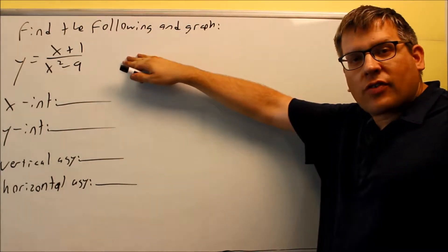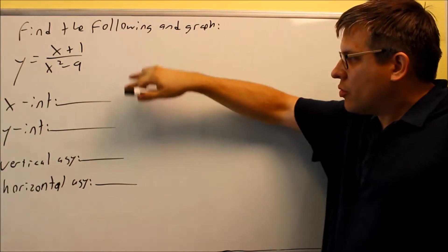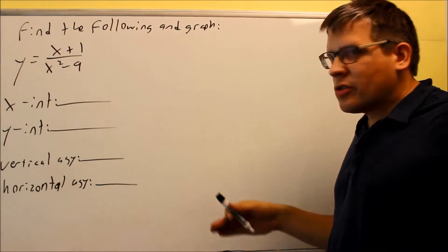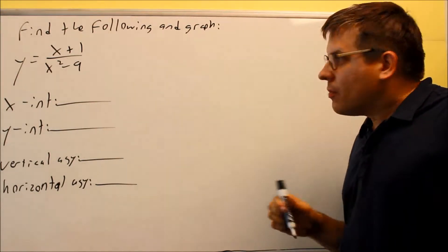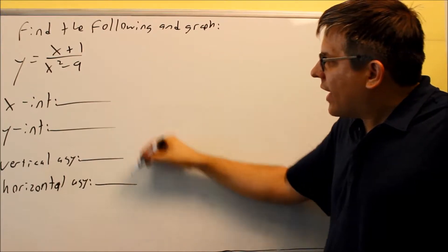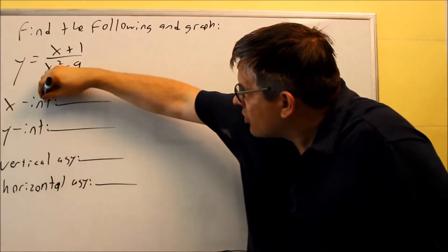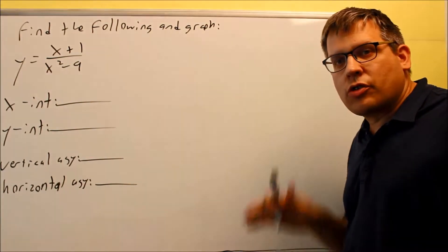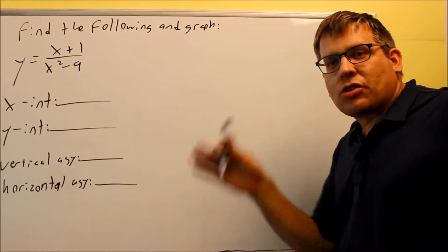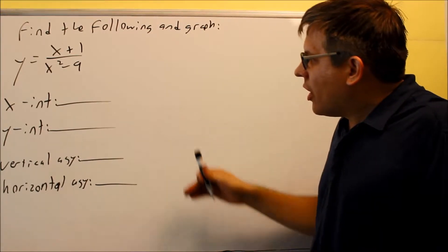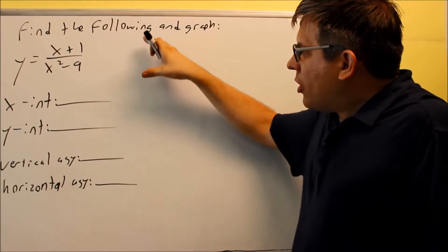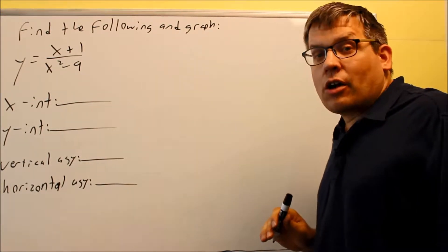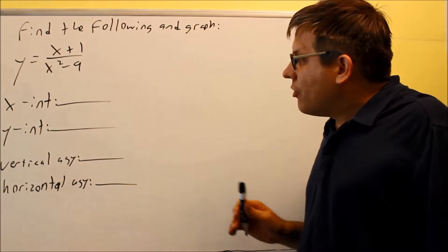We're getting into the graphs of these now, and we're going to do the same information as before. If you want to review, we've already covered how to find the intercepts and the asymptotes. If you're unsure about that, go back and check the notes in that section. We're now going to add in a graph for this section.